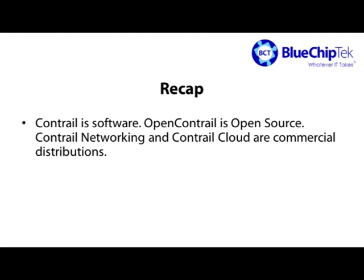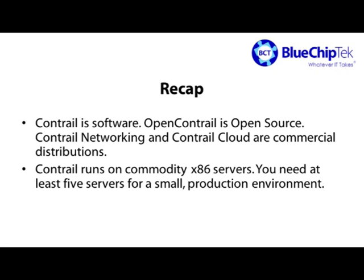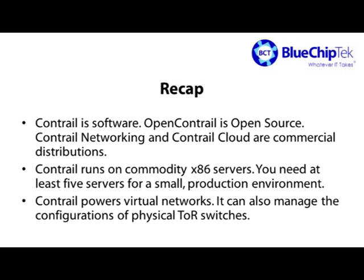In this episode, I was just looking to introduce some Contrail concepts to give you context for future episodes. Let's recap: Contrail is software. OpenContrail is completely open source. Contrail Networking and Contrail Cloud are Juniper's commercial distributions. Contrail runs on commodity servers — you'll only need a single physical server or virtual machine to kick the tires, but for anything more serious, you'll need at least five physical servers. Contrail provides the control plane and data plane for OpenStack and vSphere virtual networks, and can also manage the configurations of physical top-of-rack switches.